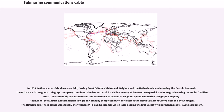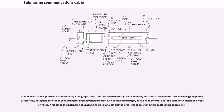The Electric and International Telegraph Company completed two cables across the North Sea, from Harford-Nest to Scheveningen, the Netherlands. These cables were laid by the Monarch, a paddle steamer which later became the first vessel with permanent cable-laying equipment. In 1858, the steamship Helbo was used to lay a telegraph cable from Jersey to Guernsey, onto Alderney and then to Weymouth. Problems soon developed, with eleven breaks occurring by 1860 due to storms, tidal and sand movements, and wearing rocks. A report to the Institution of Civil Engineers in 1860 set out the problems to assist in future cable-laying operations.